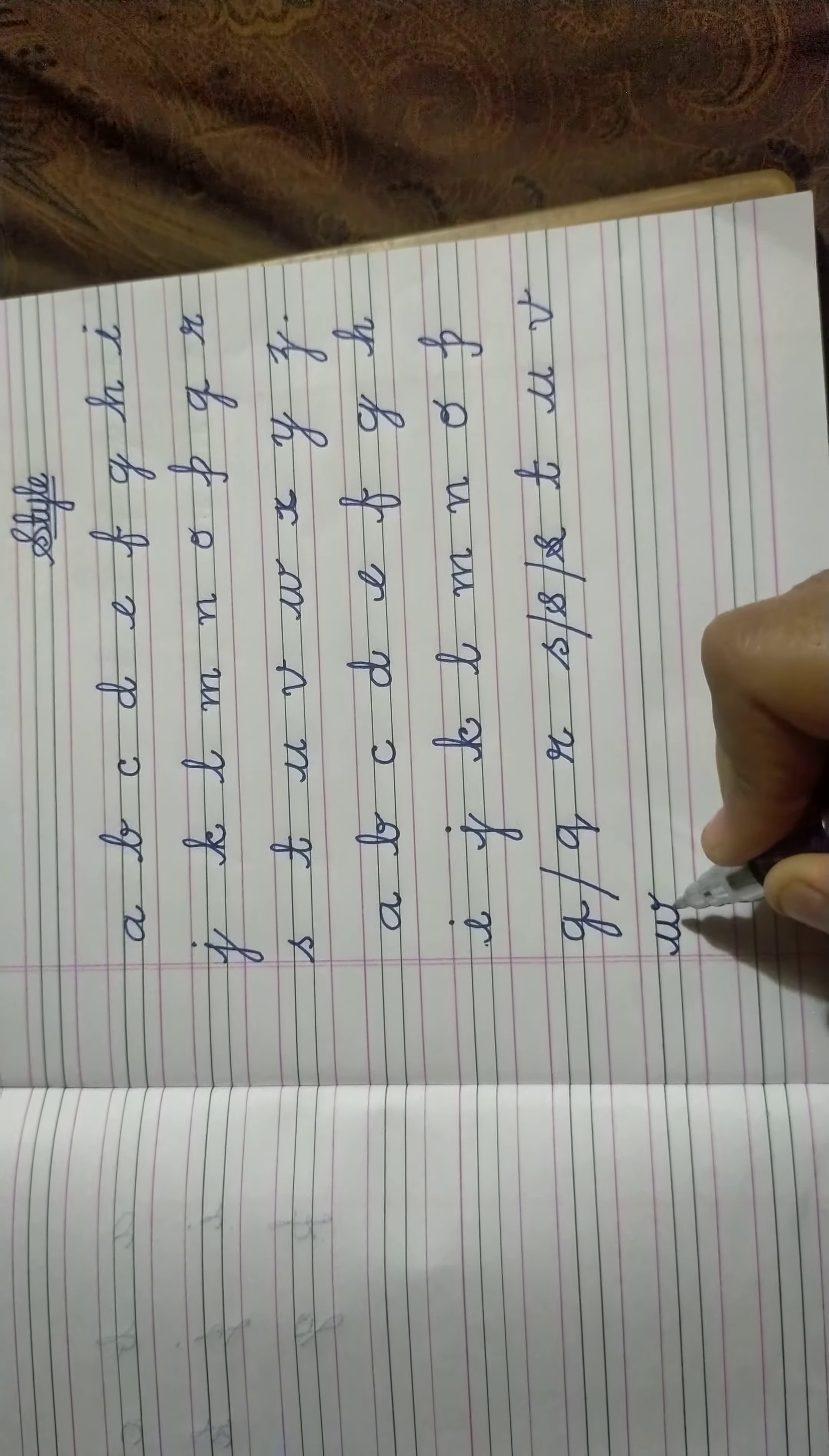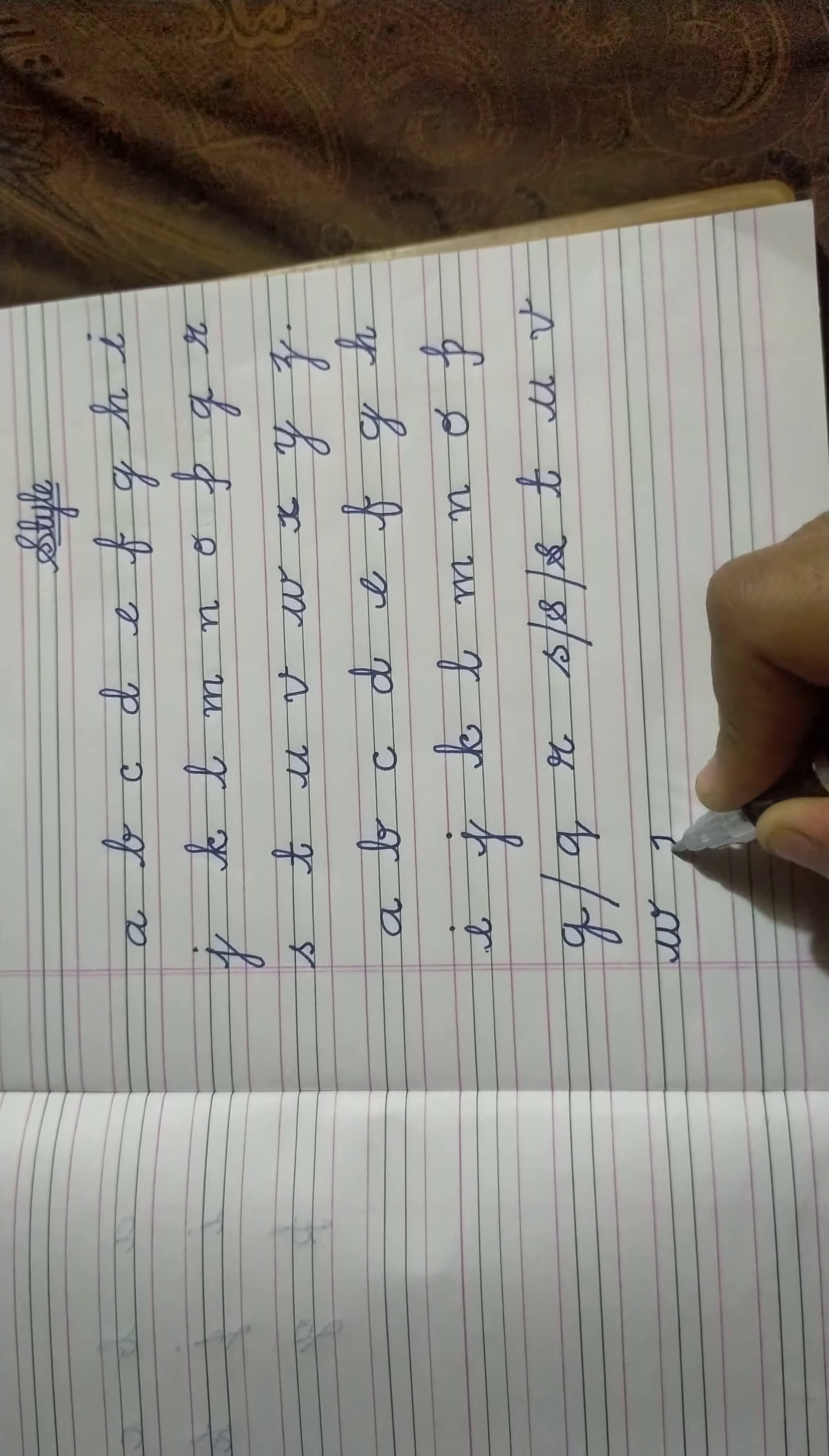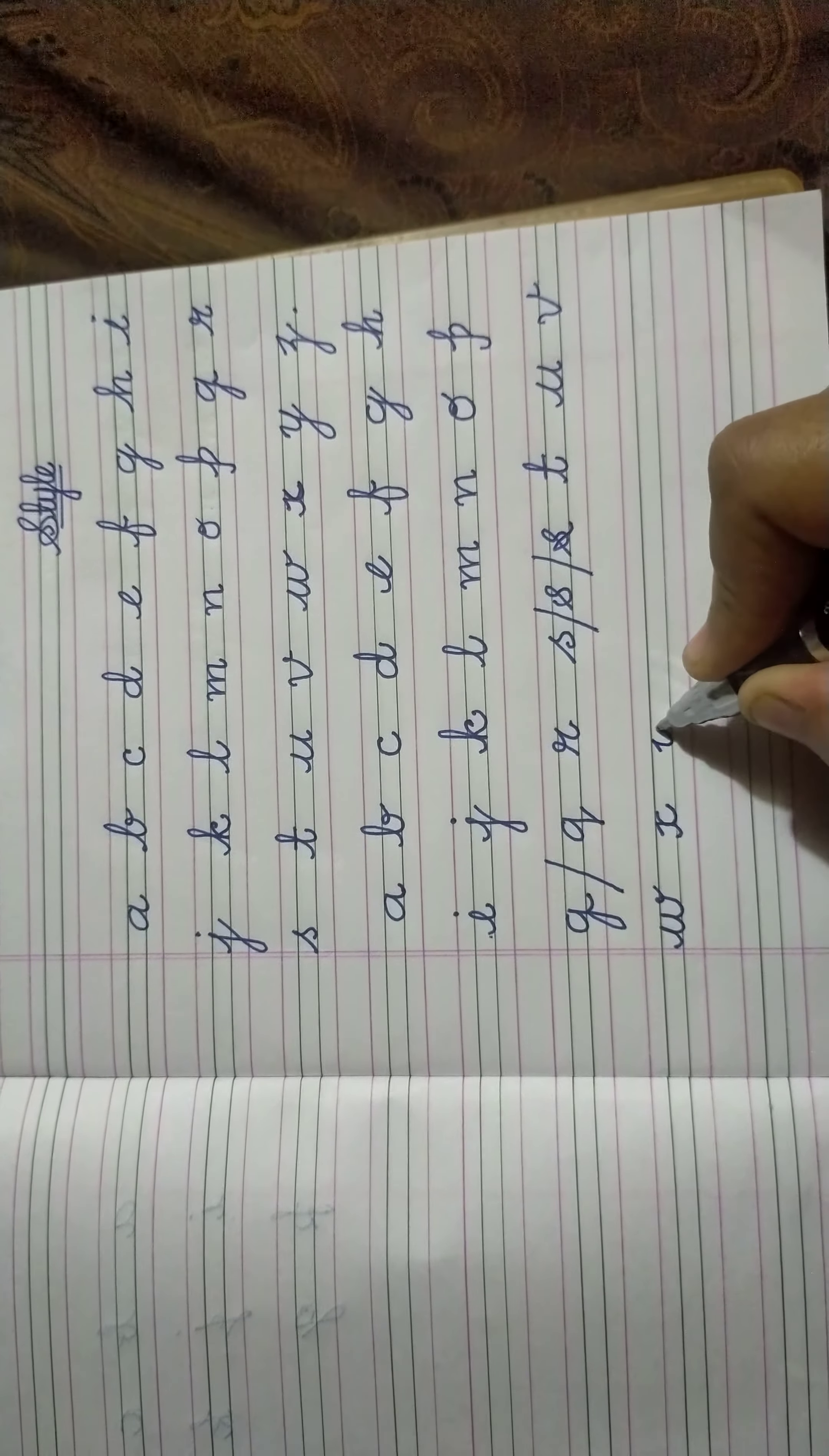Then W. W, take a tail, continue with W and take a curve. Then you have X and a slight curve.